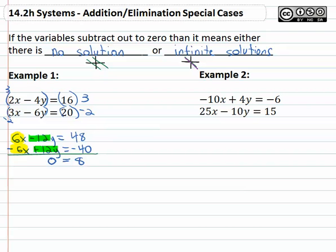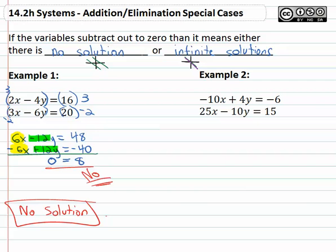There's no variables left and so what we do is we look at zero equals 8 and ask ourselves, does that make sense? No, that does not make sense. Zero and 8 are obviously different numbers. That means these equations together do not make sense. They will never have a solution. There is no solution that makes both of these equations true as a system.